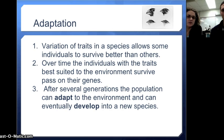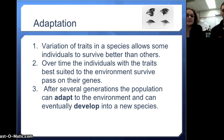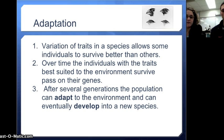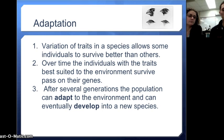Let's talk about adaptations. There's a variation of traits that allow some individuals to survive better — these are adaptations. Over time, the individuals with traits best suited for the environment will pass on their genes. If it's always snowy, a white rabbit has an adaptation that helps it survive better than a brown-haired rabbit. But if the climate changed over hundreds or thousands of years with no more snow, the brown rabbit might survive better. After several generations, a population can adapt and eventually develop into new species. New species do not develop within one generation, and those differences come from genetic variation.